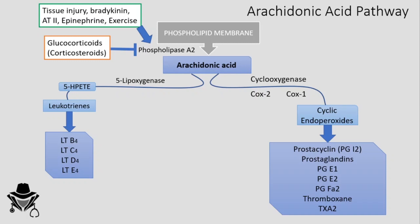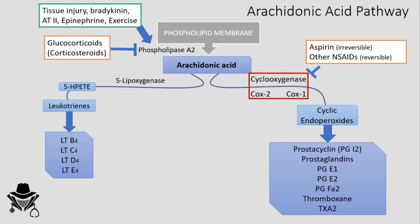Moving on to the cyclooxygenase part, we have COX-1 and COX-2 inhibitors — the NSAIDs, or non-steroidal anti-inflammatory drugs. Aspirin irreversibly inhibits COX-1 and COX-2, while other NSAIDs like diclofenac and ibuprofen reversibly inhibit both COX-1 and COX-2. Because these drugs have many side effects from inhibiting the physiological COX-1, scientists made a new drug called celecoxib, which selectively inhibits the pathological COX-2.